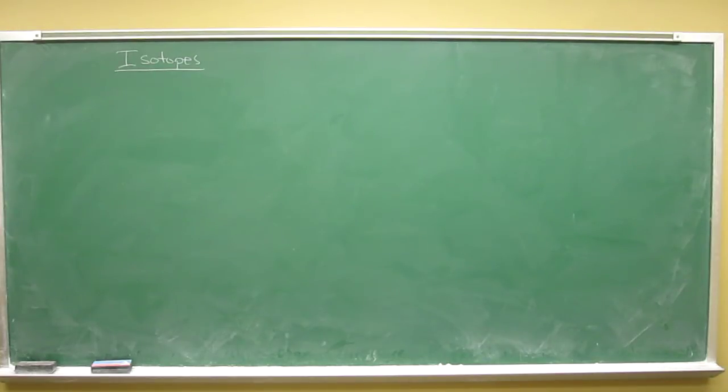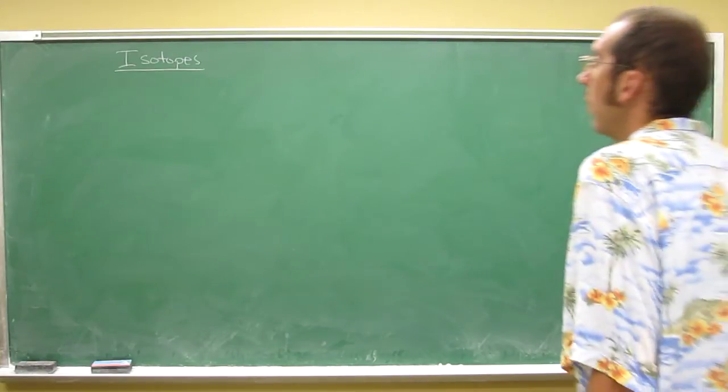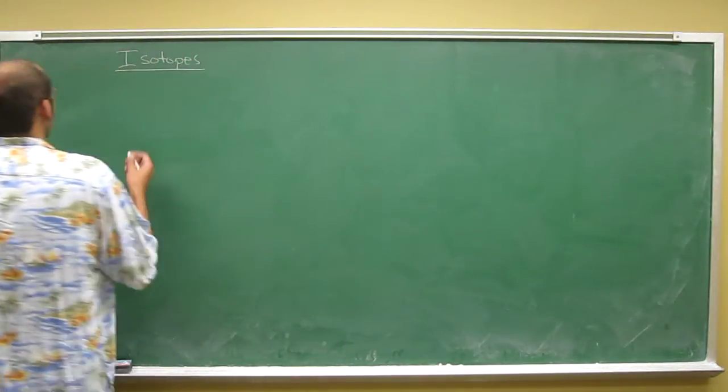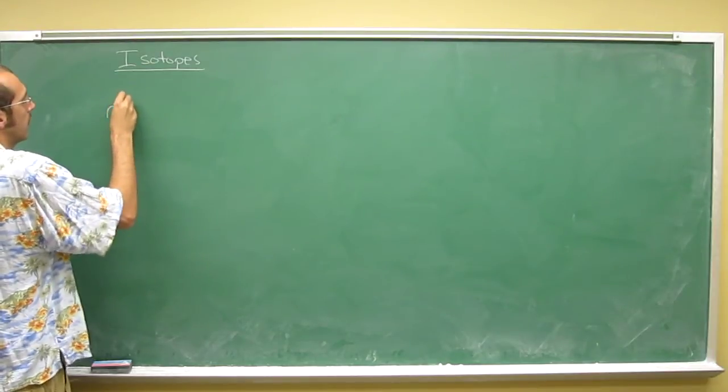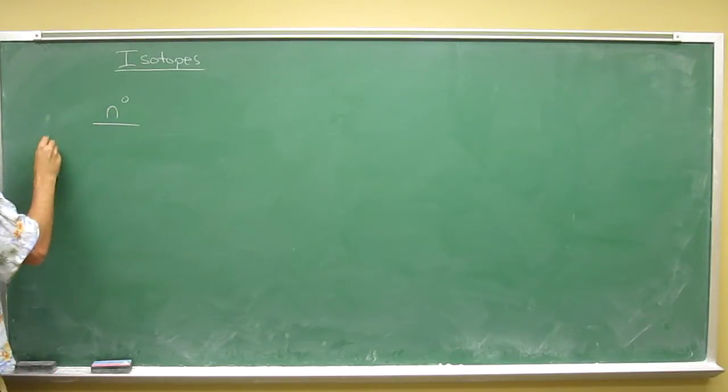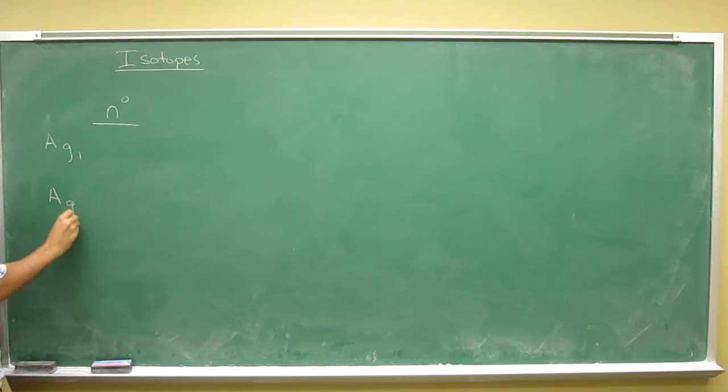So, we'll say isotope 1, the number of neutrons it contains, so we'll just say silver 1, silver 2.